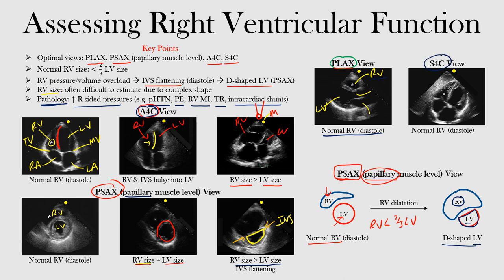The last view is the subcostal four chamber view. The star represents your right ventricle. Remember in the subcostal view you also have your liver. You have your left ventricle, your left atrium, and your right atrium, with valves between each atria and ventricle — the mitral valve and the tricuspid valve. This is a normal right ventricle in diastole: notice the right ventricle is less than two thirds the size of the bigger left ventricle.